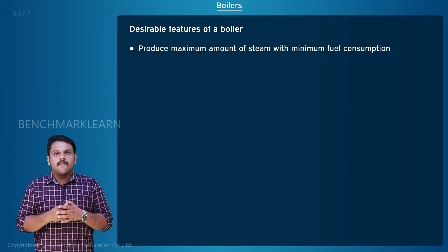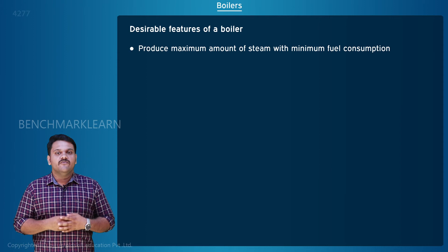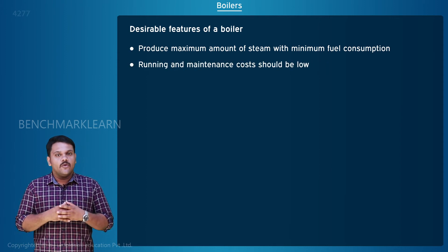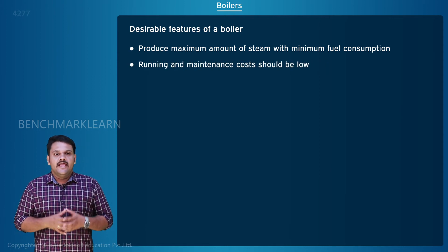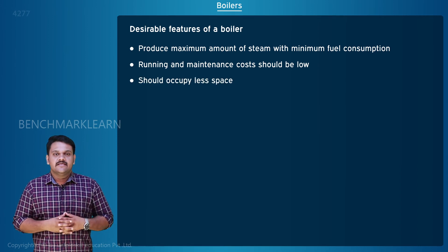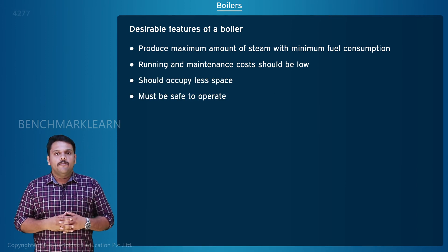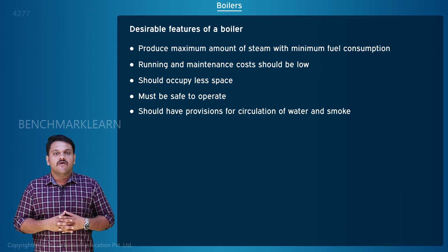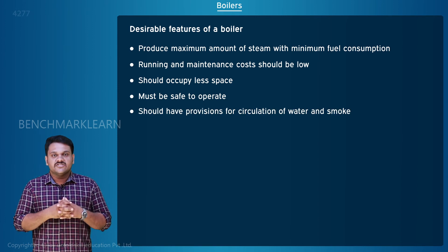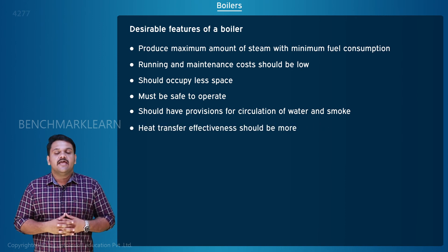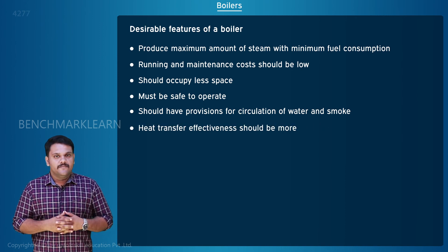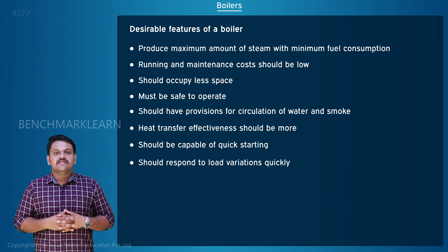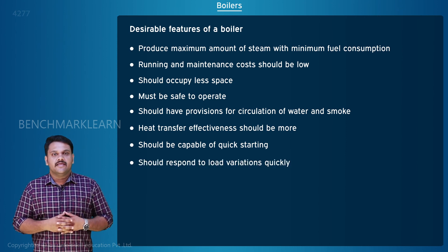A good boiler should possess the following features: produce maximum amount of steam with minimum fuel consumption; the running and maintenance cost should be low; it should occupy less space; it must be safe to operate; it should have provision for circulation of water and smoke; its heat transfer effectiveness should be more; it should be capable of quick starting; and it should respond to load variations quickly.